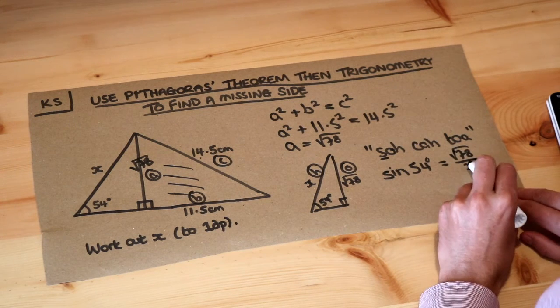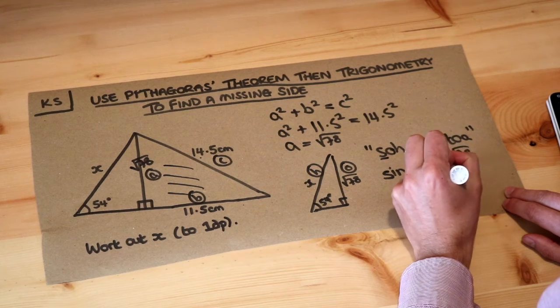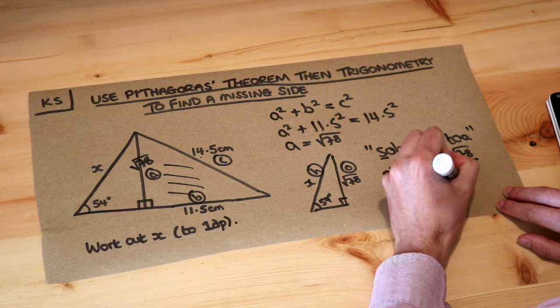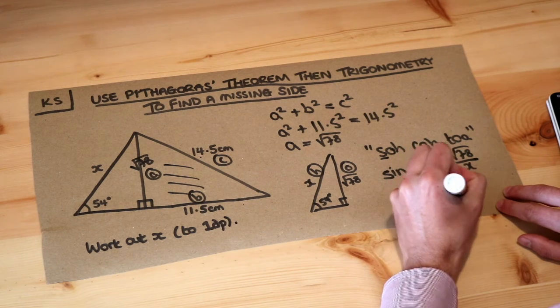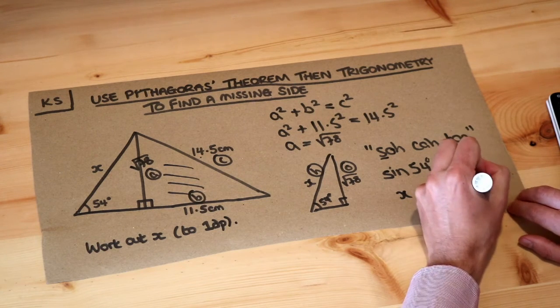And then remember my little trick for this - you can swap the thing you're dividing by and the thing on the other side of the equation. So you can swap these two to get x = √78 / sin 54°. We can always use this trick if the x, the variable, is in the denominator of the fraction.